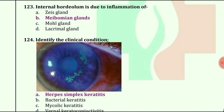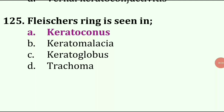Identify the clinical condition. The answer is herpes simplex keratitis. Fleischer's ring is seen in keratoconus.